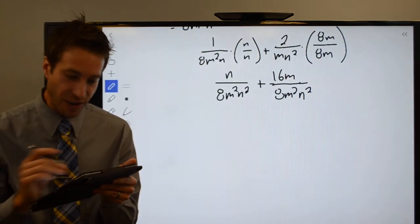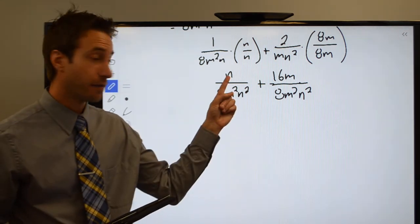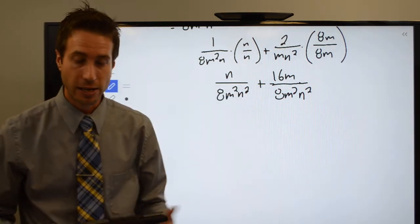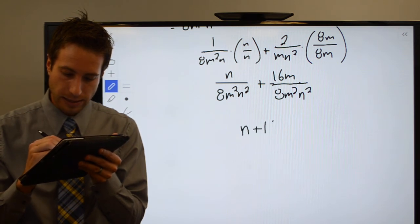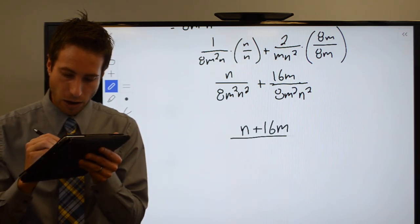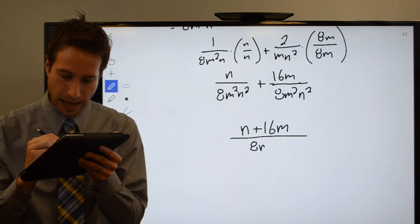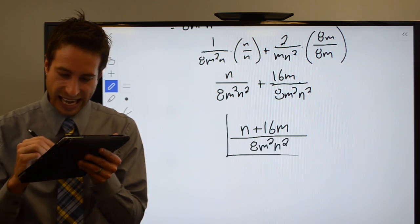Go ahead and add those numerators, but they're not like terms, right? Variable is N, variable is M. Not like terms, so it's just going to be N plus 16M all over 8M squared N squared.